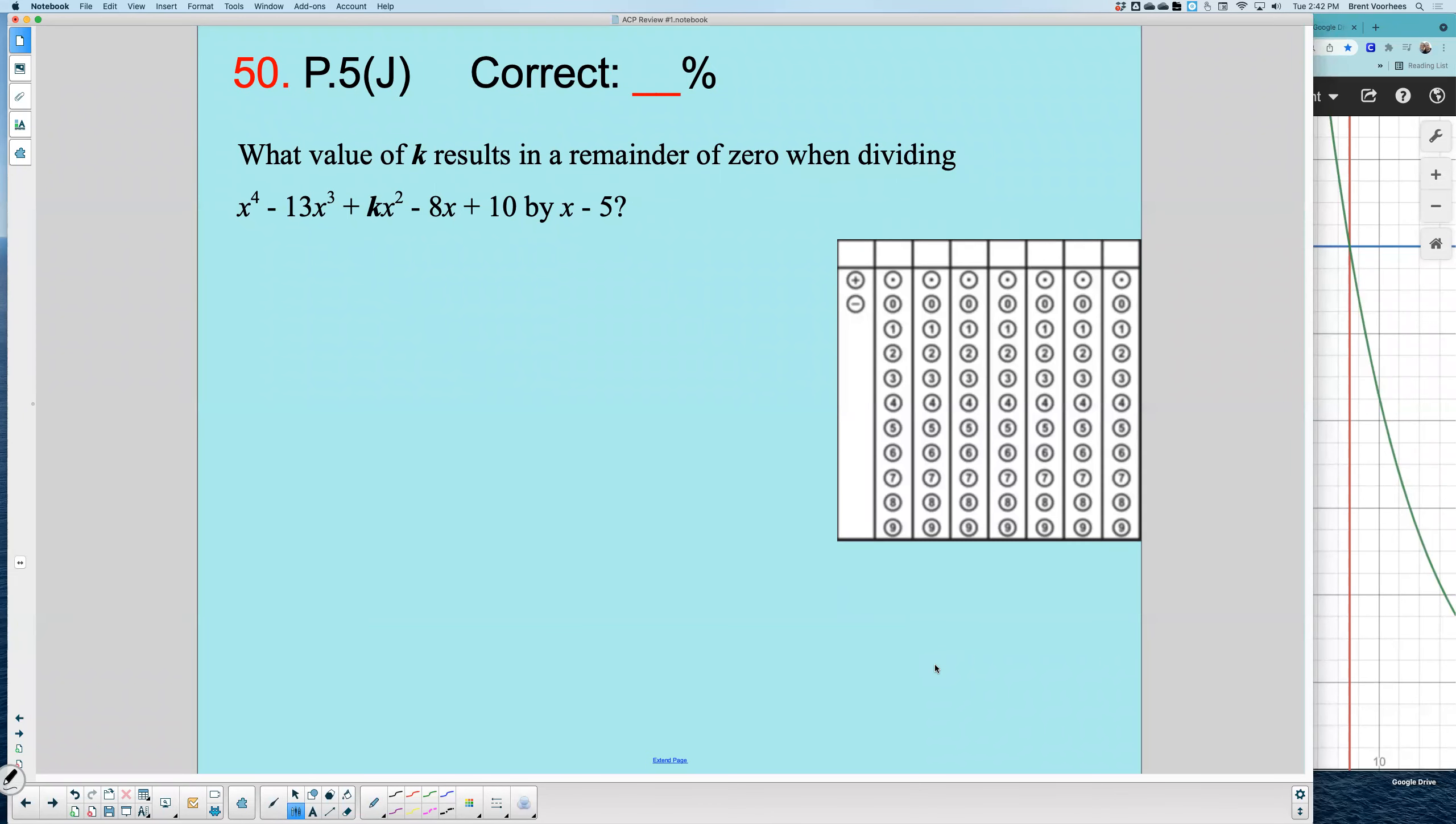Number 50, what is the value of k? What value of k results in a remainder of zero when dividing these functions?